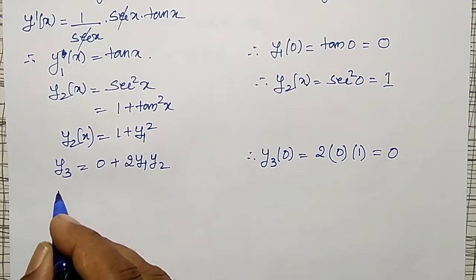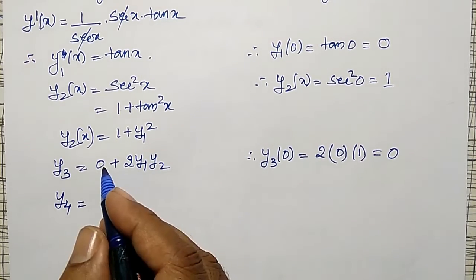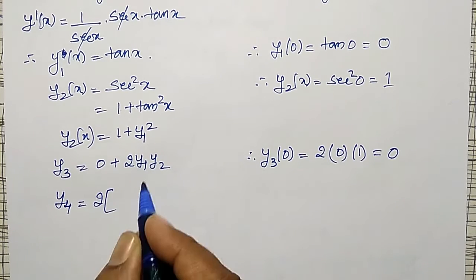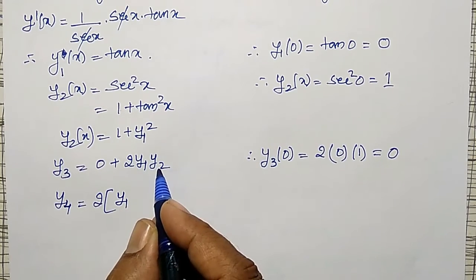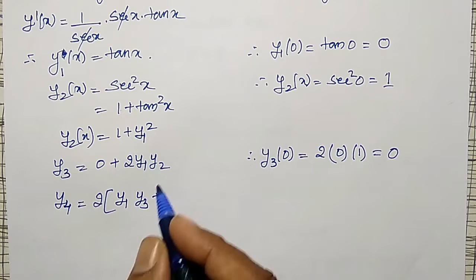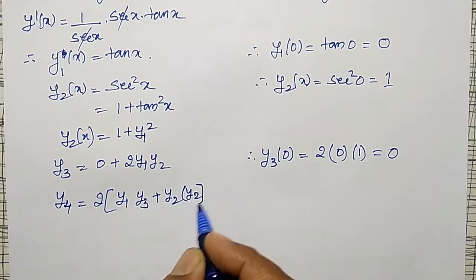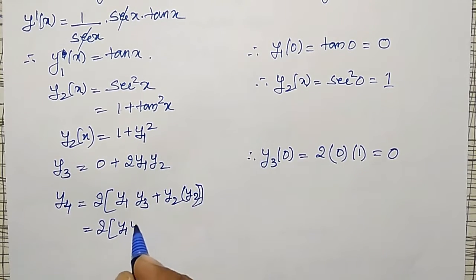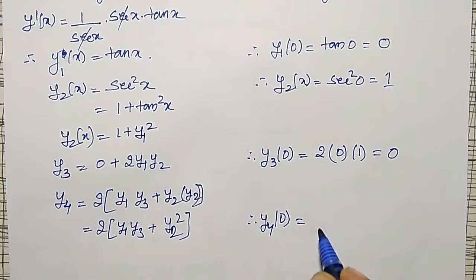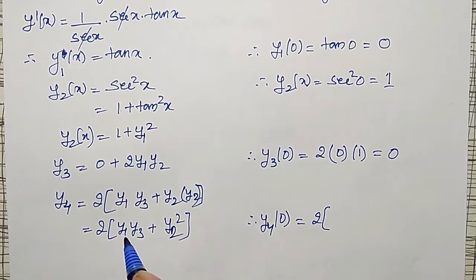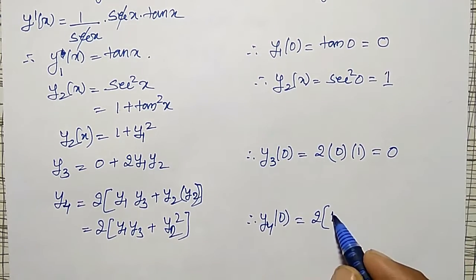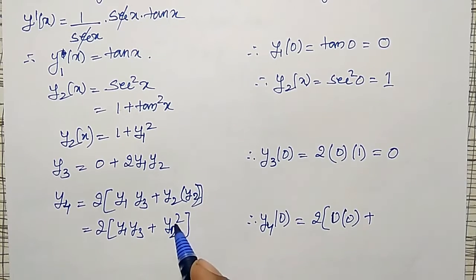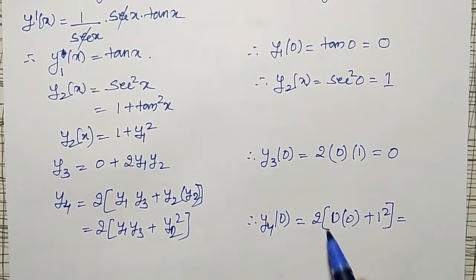Next, differentiate y3 to get y4. y4 equals 2 times, using the product rule on y1·y3: y1 into differential of y3 is y4, plus y3 into differential of y1 is y2. Also differentiating y2 squared gives 2y2·y3. So y4 equals 2(y1·y3 + y2 squared). Therefore y4 at x equal to 0 is 2 into y1(0)·y3(0) plus y2(0) squared. y1(0) is 0 and y3(0) is 0, but y2(0) squared is 1 squared equals 1. So it becomes 2 into (0 plus 1), giving y4(0) equals 2.